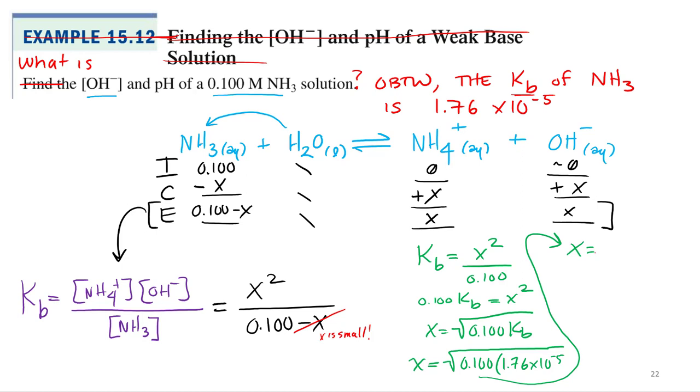I got 1.33 times 10 to the negative third. So what is that? That's X. For our purposes, what are we really interested in finding? OH. That's our hydroxide concentration: 1.33 times 10 to the negative third molar.